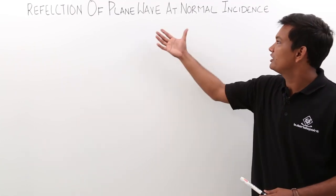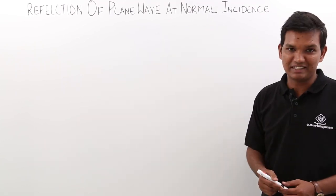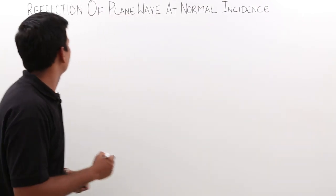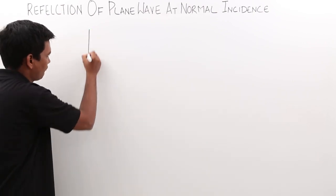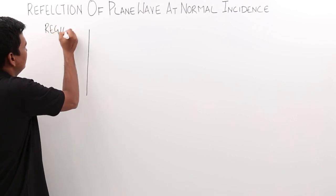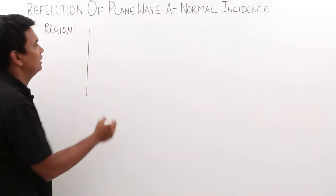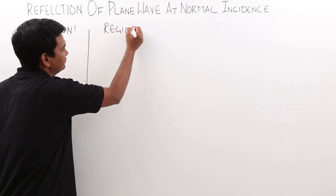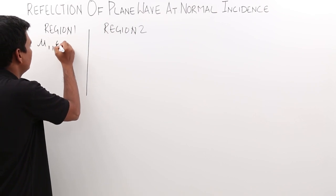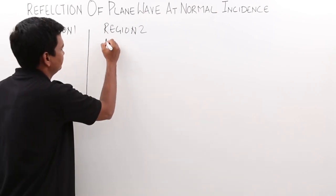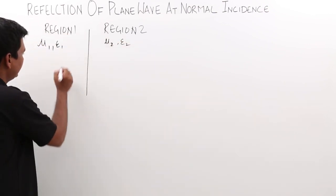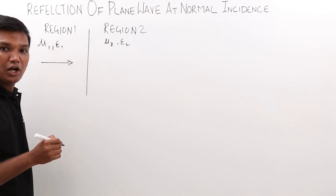In this class, we will discuss reflection of a plane wave at normal incidence. Let us try to understand this with a diagram. Let us assume this is region 1, and this is region 2 of different permeability and permittivity. Let us say that there is a plane wave incident at normal.